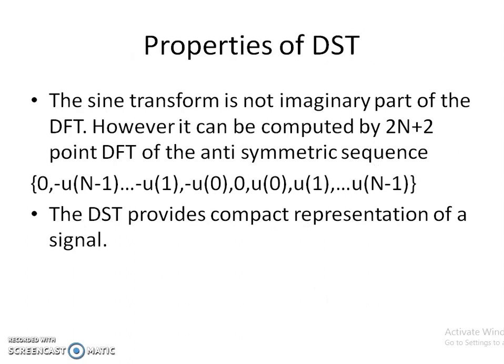Properties of DST: the sine transform is not the imaginary part of DFT. However, it can be computed by a 2N+2-point DFT of the anti-symmetric sequence: 0, u(0), u(1), ..., u(N-1), 0, −u(N-1), ..., −u(1), −u(0). DST provides a compact representation for the signal, and when it comes to compactness property, it is almost similar to the DCT case.